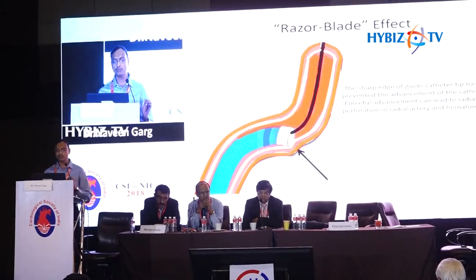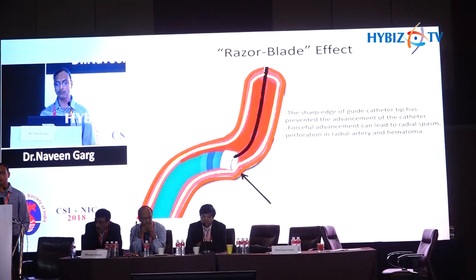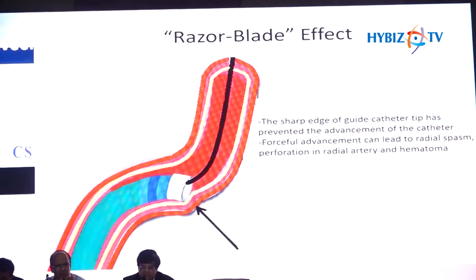What is the razor blade effect? When we have a 3-5 wire in the guide catheter, there is a wide free space in the guide catheter between the wire and the catheter wall. This free edge of the guide catheter remains in contact with the radial artery, and this edge produces injury to the radial artery. This is the basic mechanism of the razor blade effect, and it is especially noticeable if the patient has tortuosity in the radial artery.